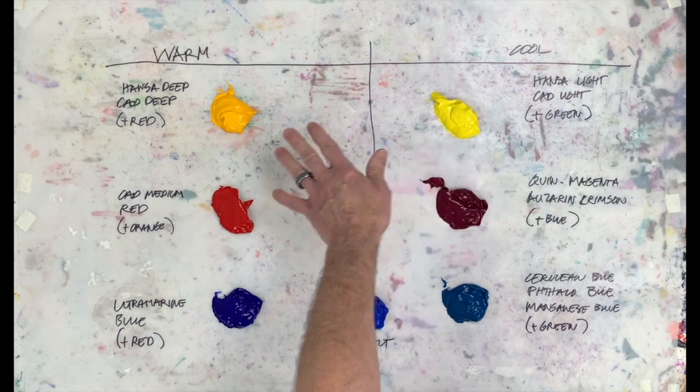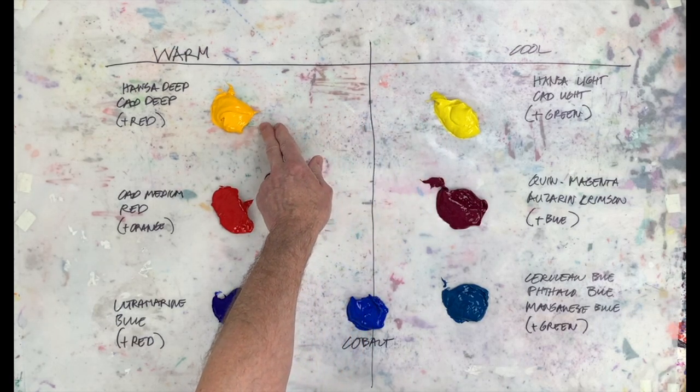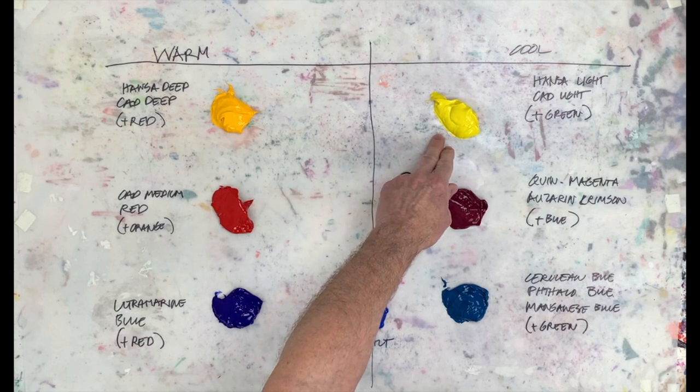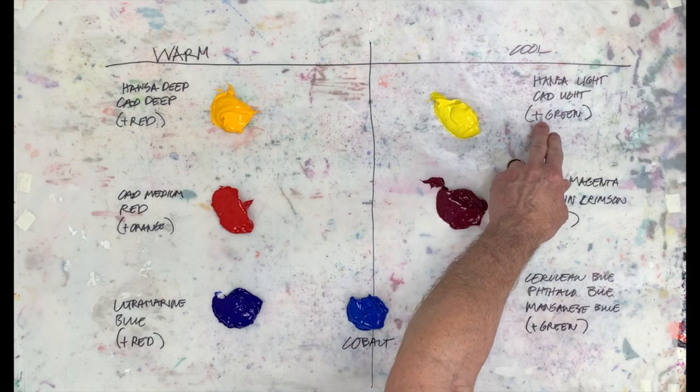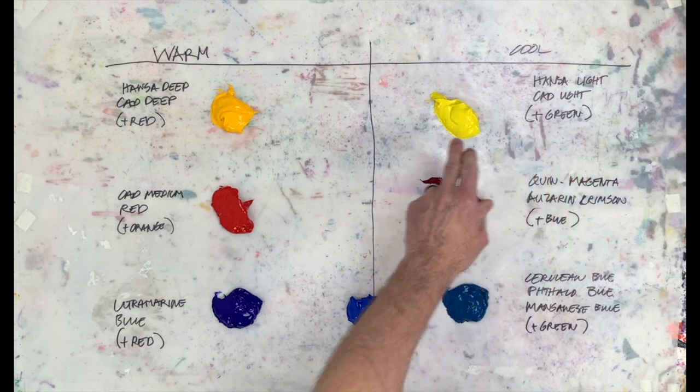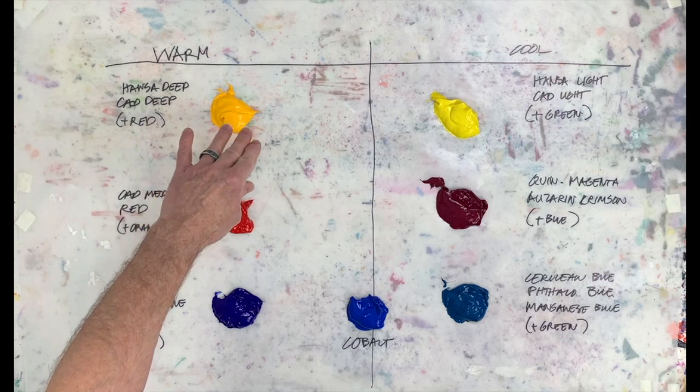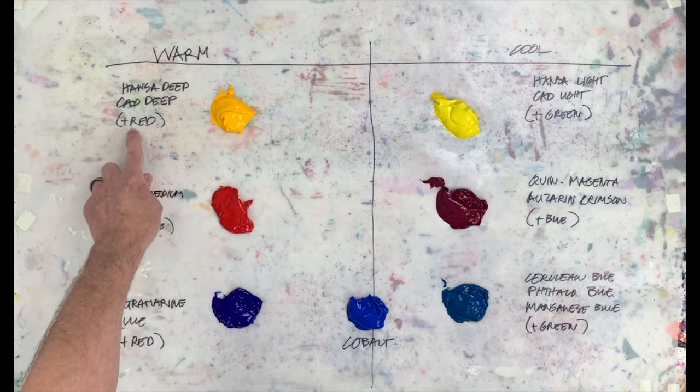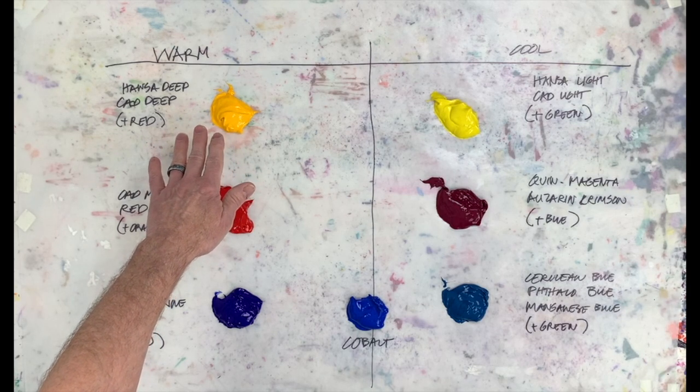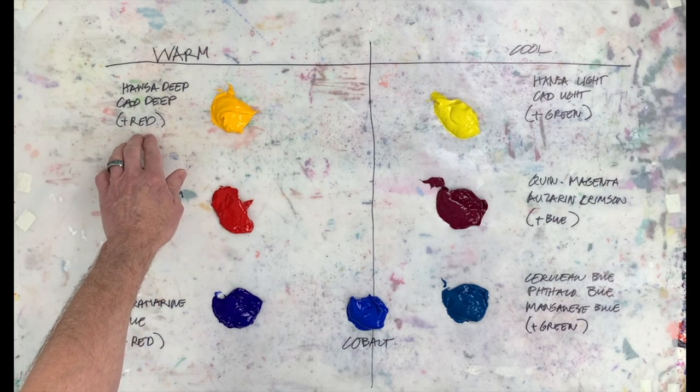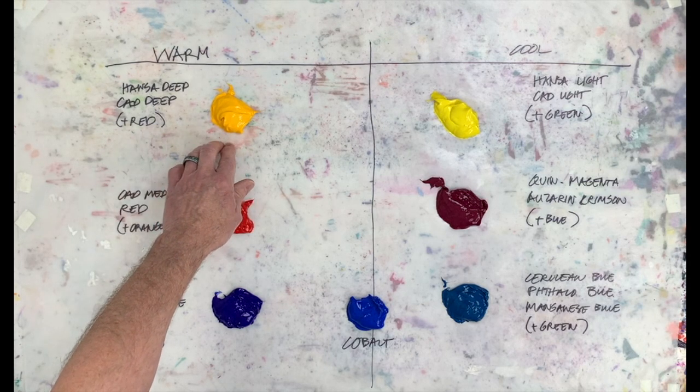If we look at these two, you can tell that this one is cooler than this one because this one appears to be on the greenish side. A cool yellow is cool because it has green in it. The warm yellow, you can see, is much closer to orange. Yellow plus red makes it look more orange, so a warmer yellow is going to have the addition of red that makes it warmer.